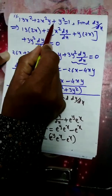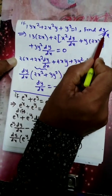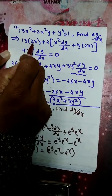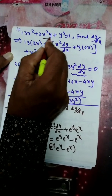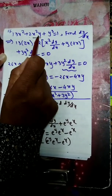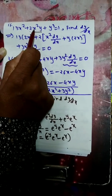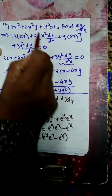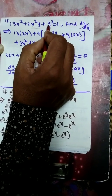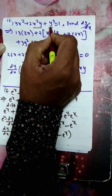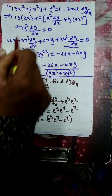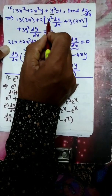Next example: if 13x² + 2x²y + y³ = 1, find dy/dx. Differentiating with respect to x: 13 times derivative of x² is 2x, giving 26x. For 2x²y, this is a product — apply the u·v rule: x² as it is times derivative of y is dy/dx, plus y as it is times derivative of x² is 2x. For y³, the derivative is 3y² times dy/dx. The constant 1 has derivative 0.